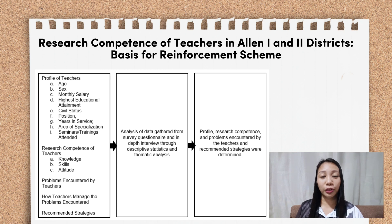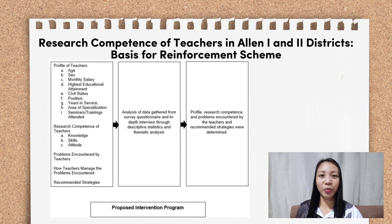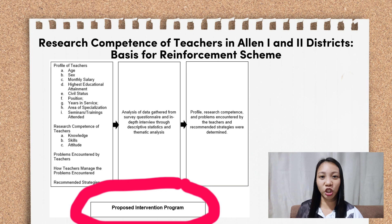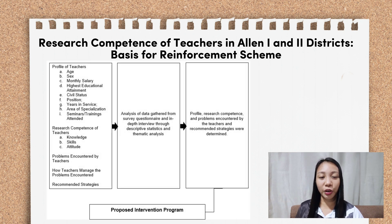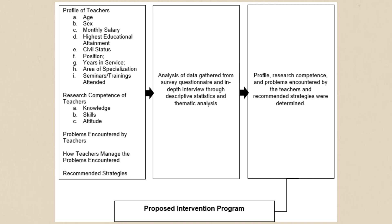If you watched my previous video where I discussed how to make the IPO model, this is almost similar. The P model differs from the IPO model because we need to include another figure below, and you have to write 'Proposed Intervention Program.' Please connect the third figure to the figure that you have added below — the proposed intervention program. Just like that, we are already done with the P model.